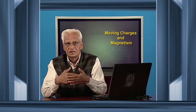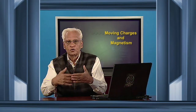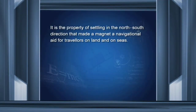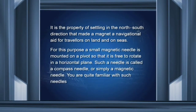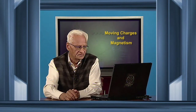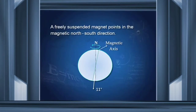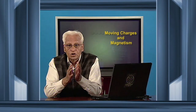In ancient times, you could find your direction with the help of magnets, which is why they were called navigational aids. For this purpose, a small magnetic needle is mounted on a pivot so that it can rotate freely in the horizontal plane. Such a needle is called a compass needle. Strictly speaking, a freely suspended magnet points in the magnetic north-south direction, not geographic.